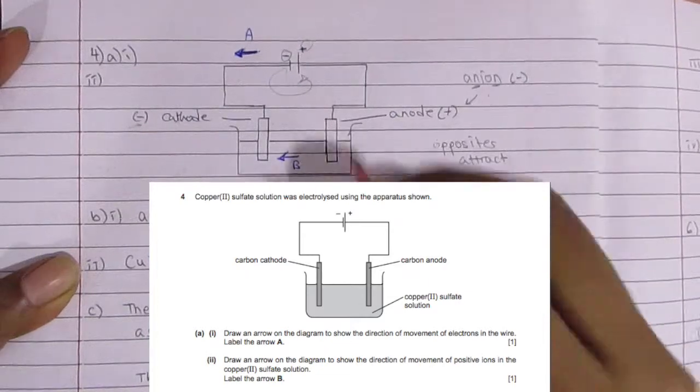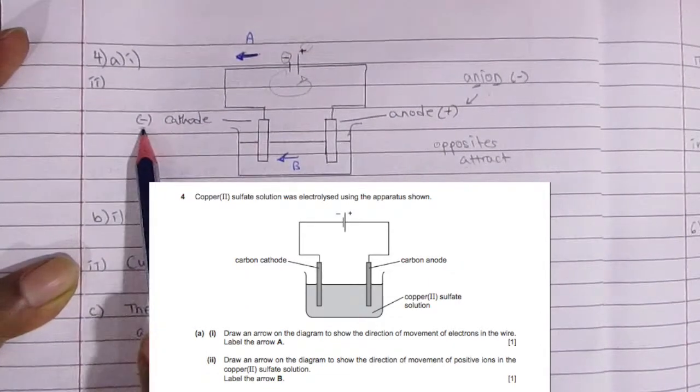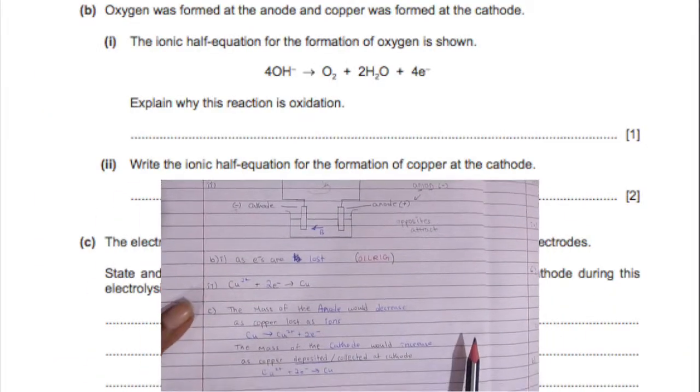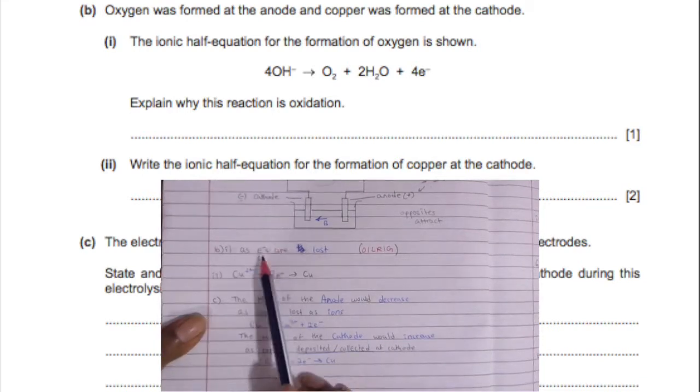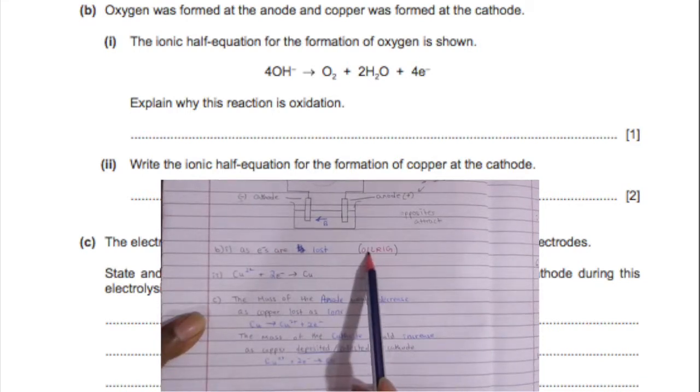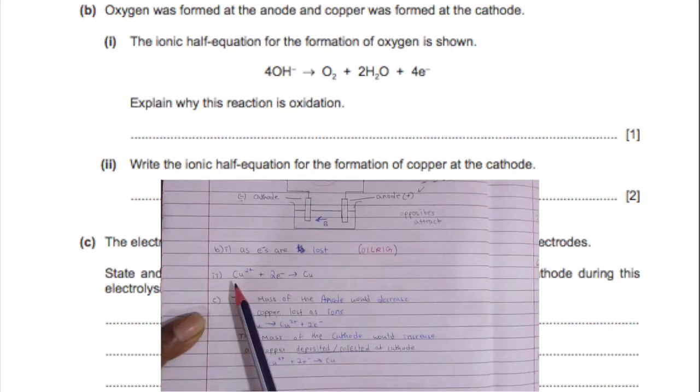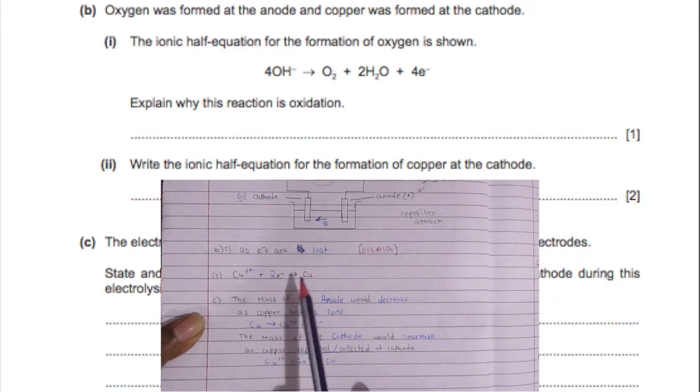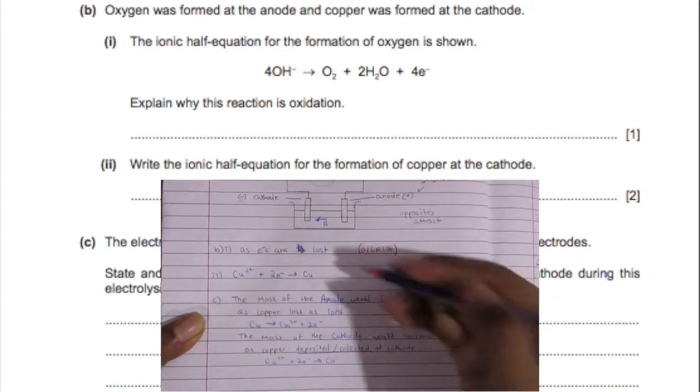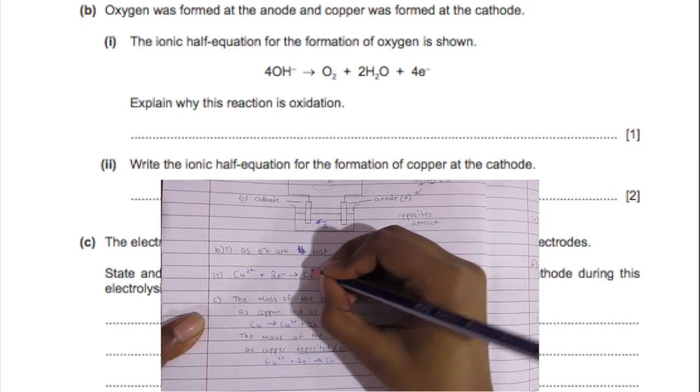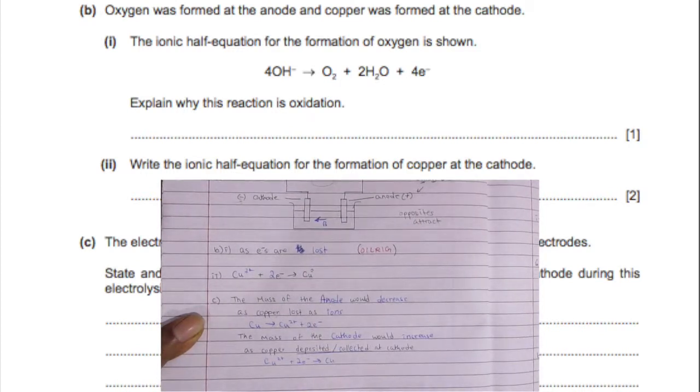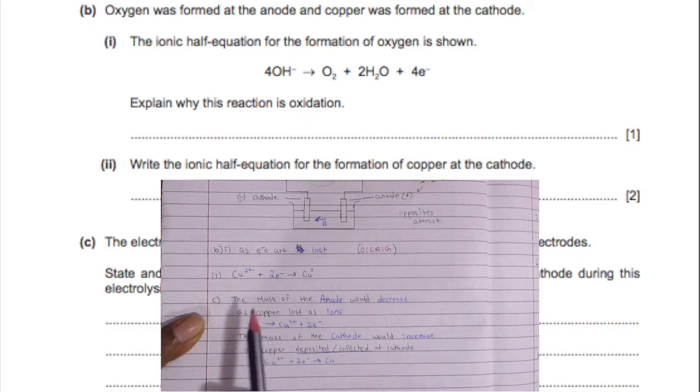So if the anode is positive then the cathode has to be negative. Now for the next one we have the reaction where oxygen is formed and you can see that electrons are also lost. That is why the reaction is an oxidation reaction, because electrons are lost. So you can remember using OIL RIG: oxidation is loss of electrons and reduction is gain of electrons.